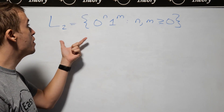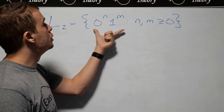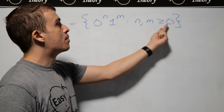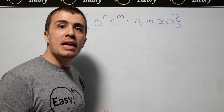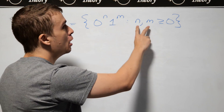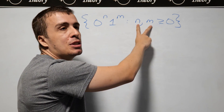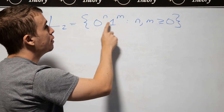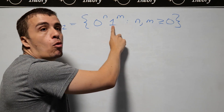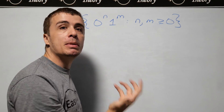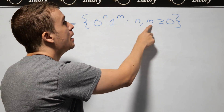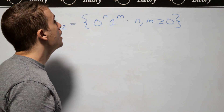Let's make a context-free grammar for L2, which is the set of strings of the form 0^n 1^m, where n and m are at least zero. One thing to be aware of when making a context-free grammar for a given language is: what are the relationships between the counts? The count n is the number of zeros, and m is the number of ones. Note that there's no correspondence between the n and m parameters — they don't have to be the same or different. They're just independent numbers, so we can treat them completely separately.